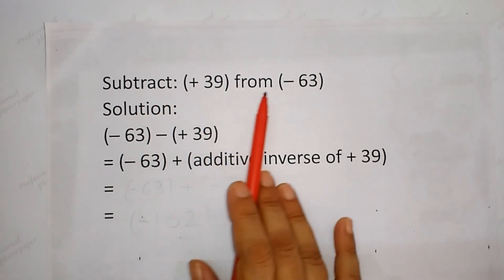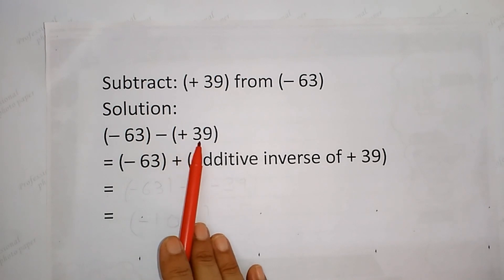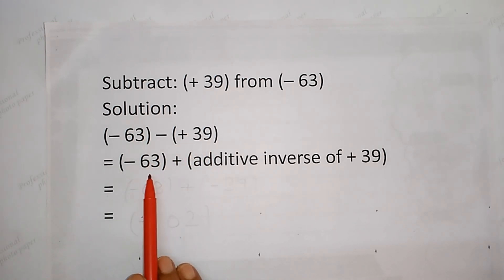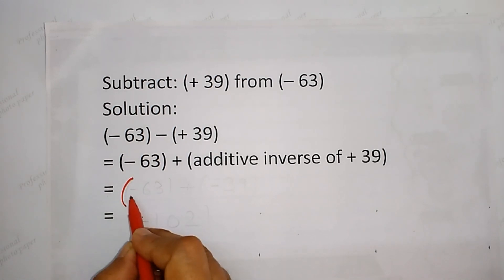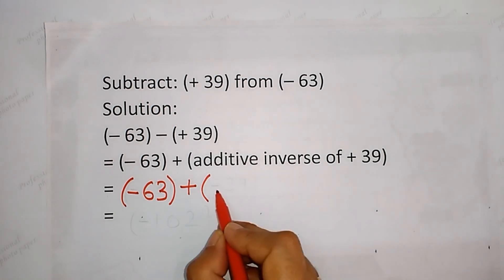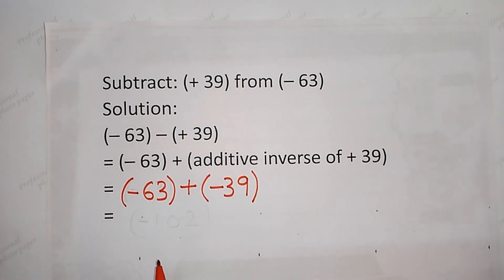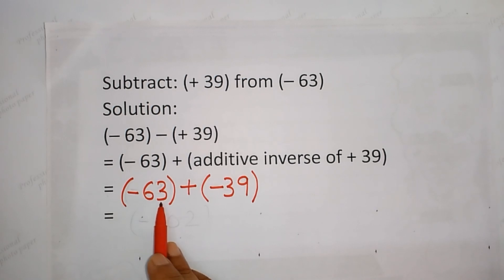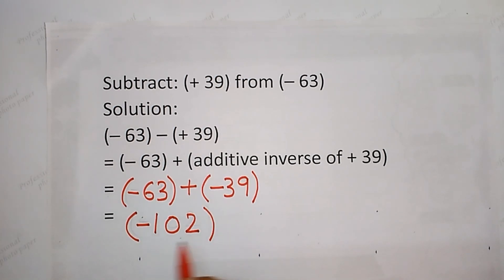Subtract plus 39 from minus 63. Minus 63 minus plus 39 is equal to minus 63 plus the additive inverse of plus 39, which is minus 39. That gives us minus 63 plus minus 39. Now, we have two negative integers, so we add: 63 plus 39 is 102. The answer takes the minus sign. So the answer is minus 102.